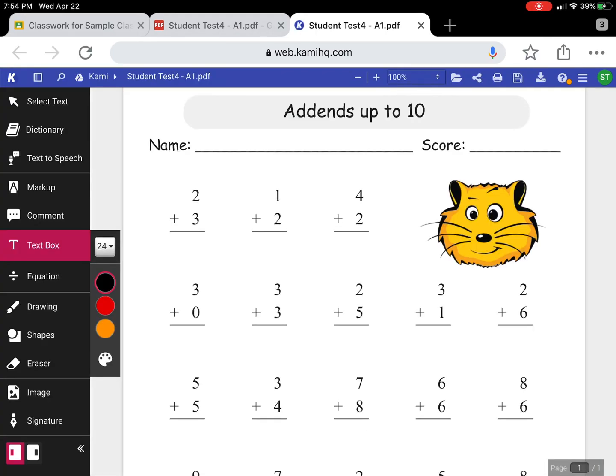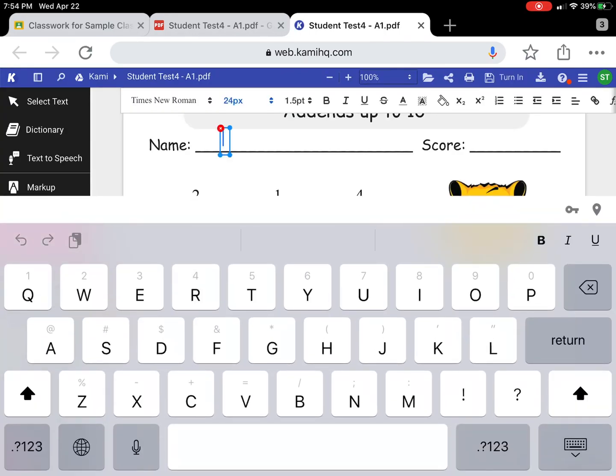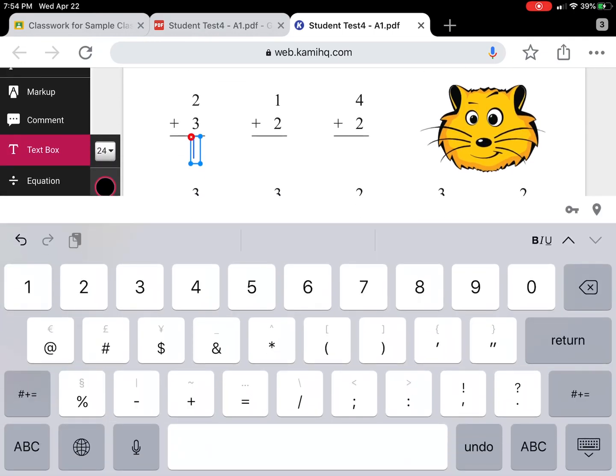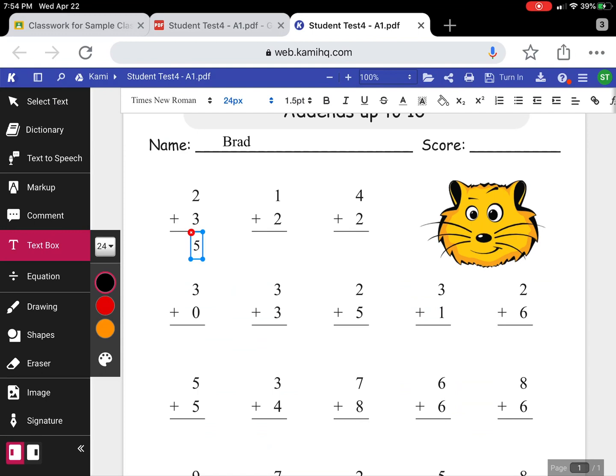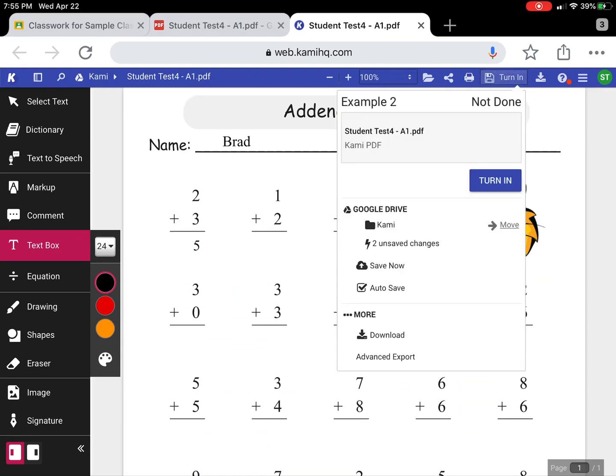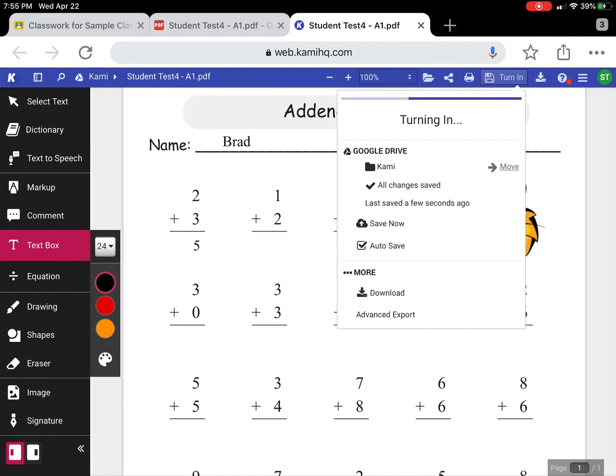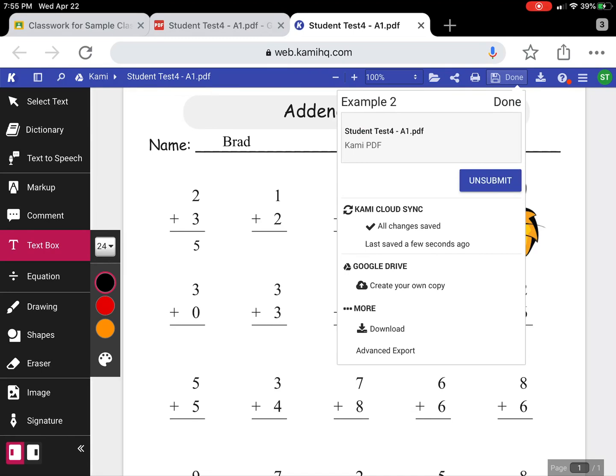On the left hand side again you will see the annotation tools at which time you can then go ahead and fill out this PDF as you would like. When you're ready and you've filled this all out, in the upper right select turn in, double click turn in again. It'll show you that it's saving to Google Drive and it has now been submitted.